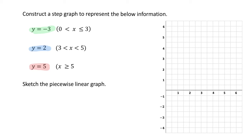When the inequality sign includes an equal to symbol, the dot will be solid. Looking at our first equation, it does not have an equal to symbol, so it will be empty. Our second equation does have an equal to symbol, so it will be solid on that end. In the second equation, both ends don't have an equal to sign, so both will be empty. For the third equation, it does have an equal to symbol, so it will be solid.